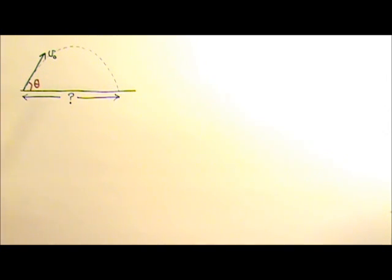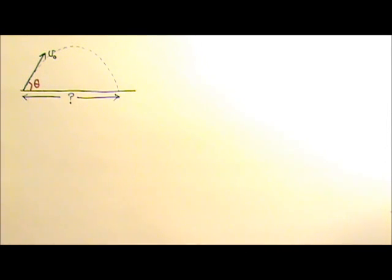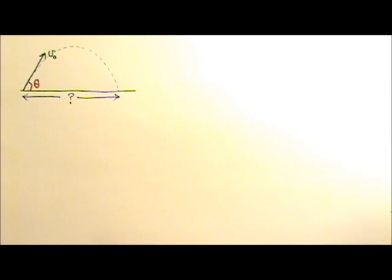Water comes out of a nozzle on level ground at the speed of V₀. If the nozzle is pointed at an angle theta above the horizontal, how far away does the water beam hit the ground? No numbers are given,